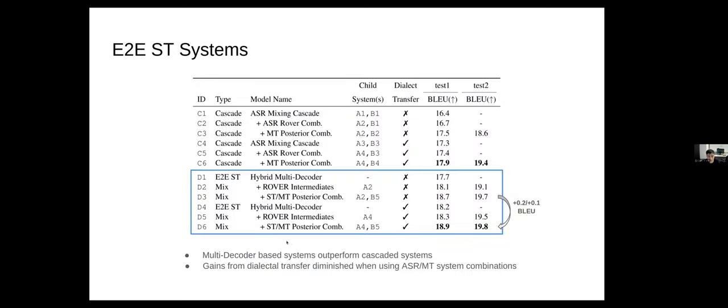As you can see the results here, the multi-decoder systems in the blue box here outperformed the cascaded systems. And you can see that, as before in the cascaded section, the rover and posterior combination techniques were important to improving our overall performances. And you can also see that the gains from dialectal transfer become relatively small as our systems got better. Here we only saw 0.2 to 0.1 BLEU gains.